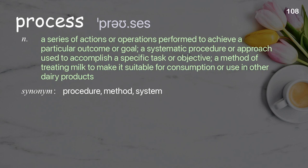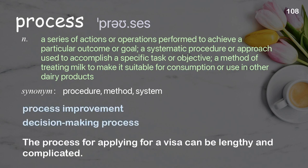Process: a series of actions or operations performed to achieve a particular outcome or goal; a systematic procedure or approach used to accomplish a specific task or objective. Examples: process improvement, decision-making process. The process for applying for a visa can be lengthy and complicated.